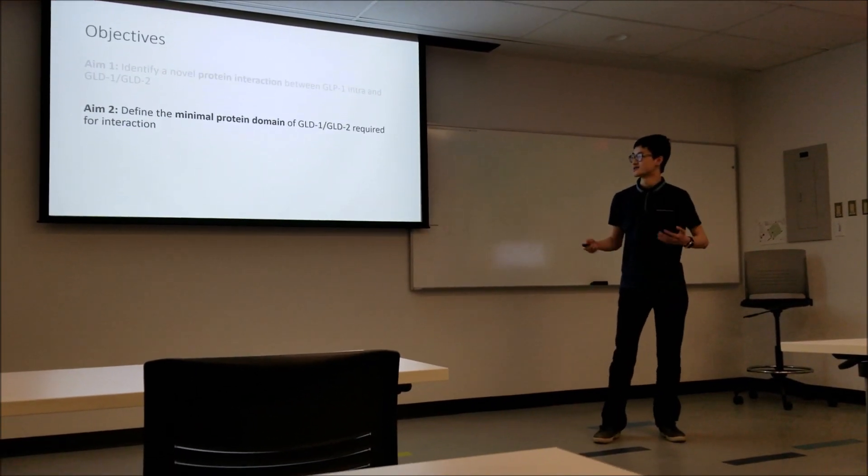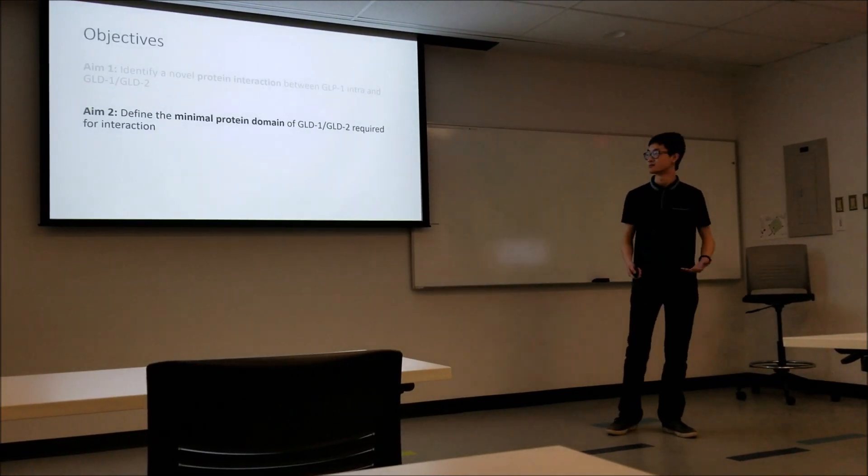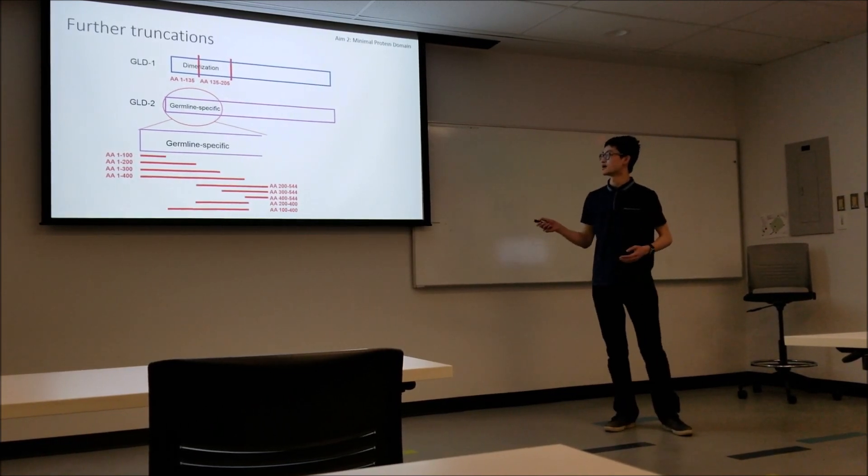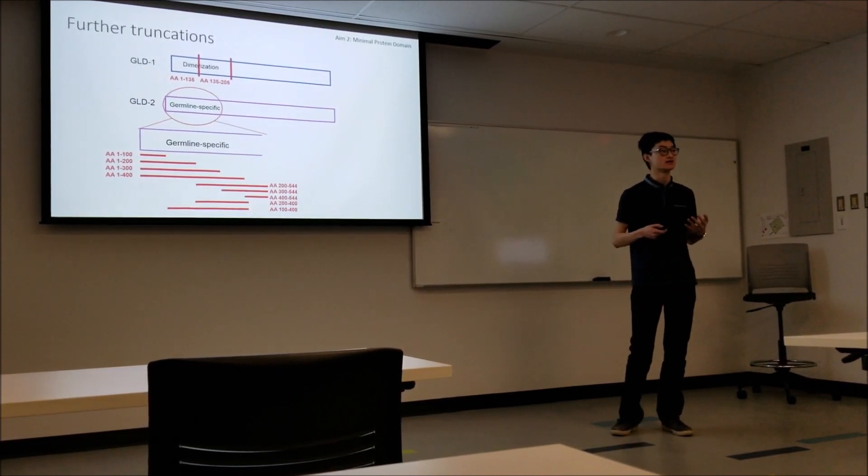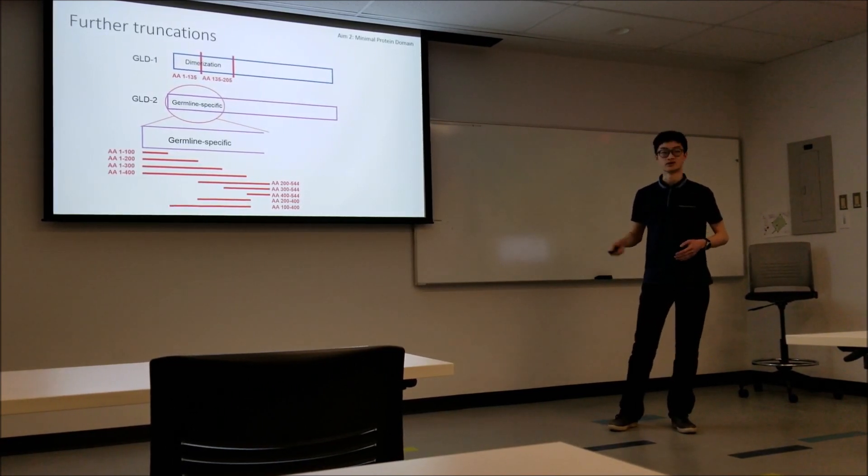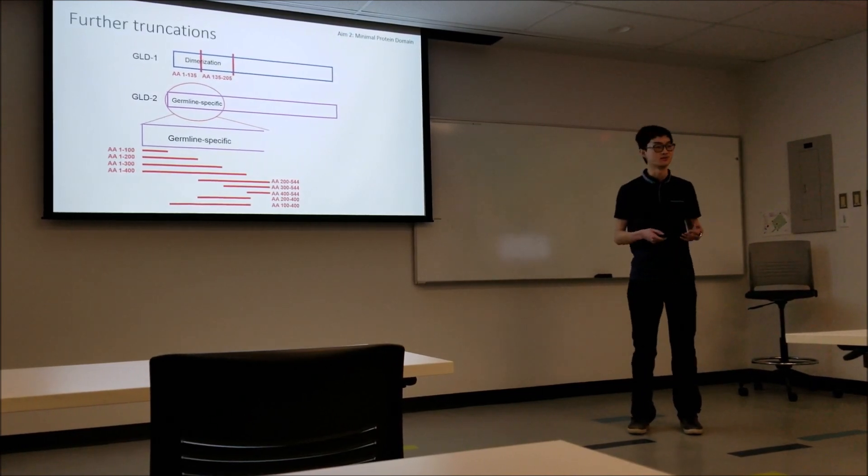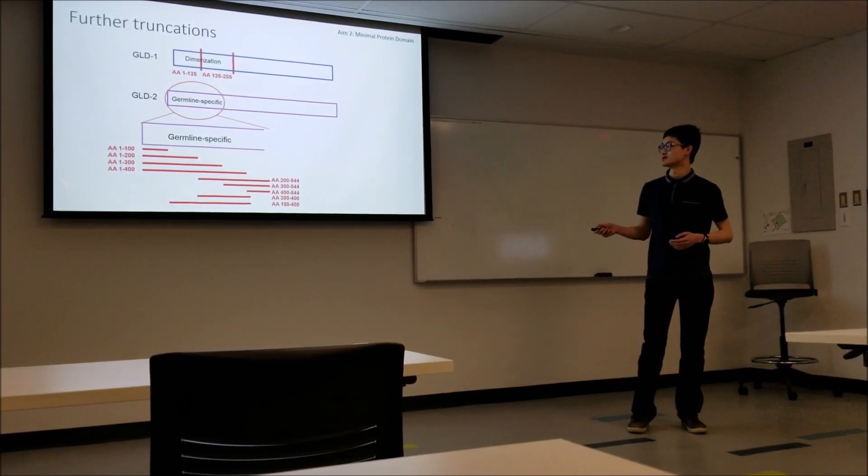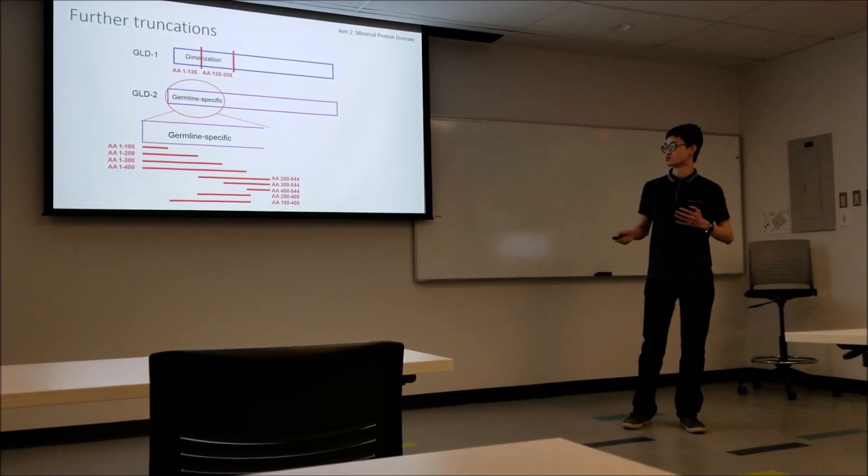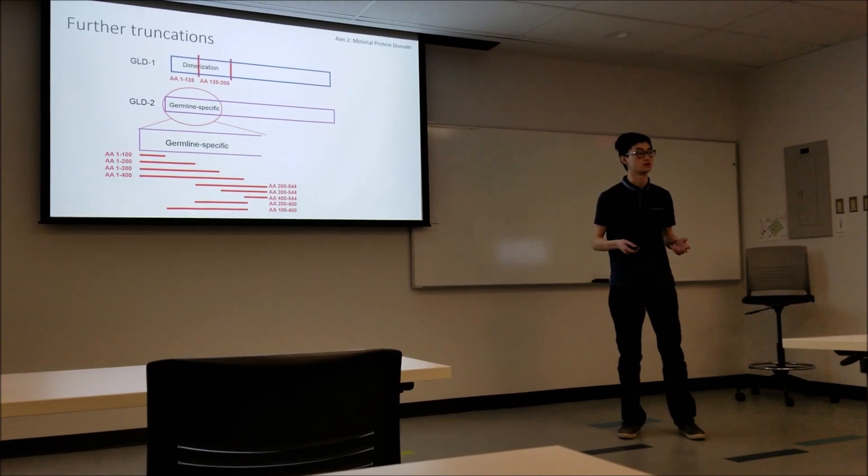The second aim is really going to be breaking it down, seeing where that interaction is taking place. We're literally going to use PCR, we're going to break it down some more. Here's GLD1, here's that dimerization domain I told you about, and we're going to cut it right in half and see if either one of those halves is able to interact. For GLD2, we're going to get a little bit fancier. I've done these overlapping truncations just to really try to capture where exactly along this protein the interaction is taking place.